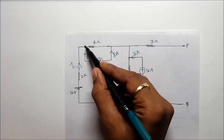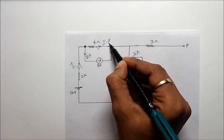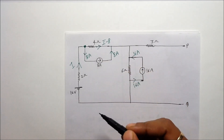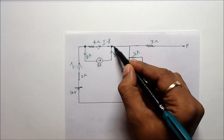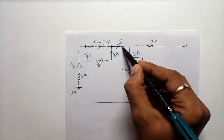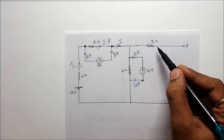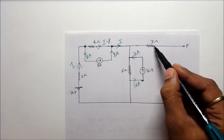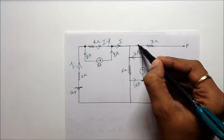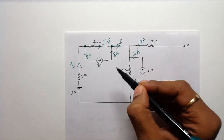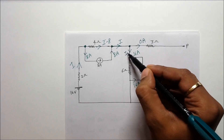If you apply KCL at this node, you can say that current i minus 8 ampere will flow through the 4 ohm resistance. If you apply KCL at this node, you can say that current i ampere will flow in this branch. The current flowing in this 3 ohm resistance is 0 ampere because there is an open circuit.